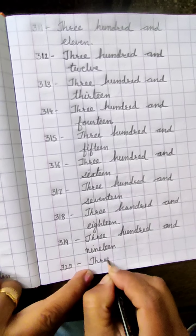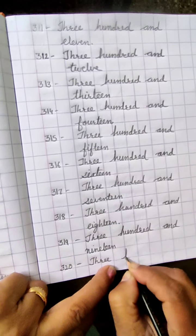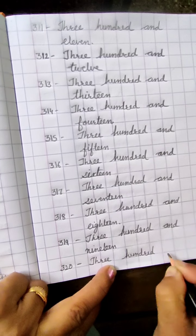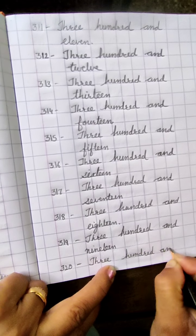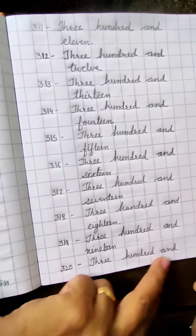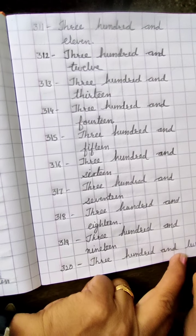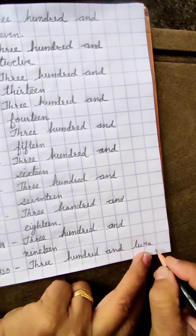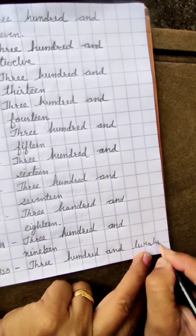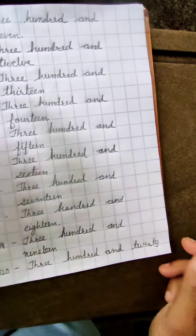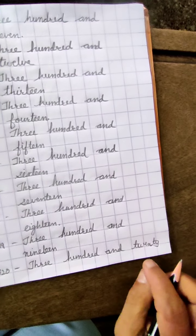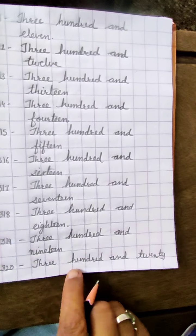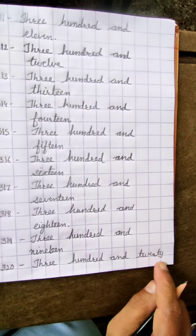THREE HUNDRED — T-H-R-E-E, H-U-N-D-R-E-D, 100 — AND T-W-E-N-T-Y, 20. You have to write over here only. Three hundred and twenty, 320.